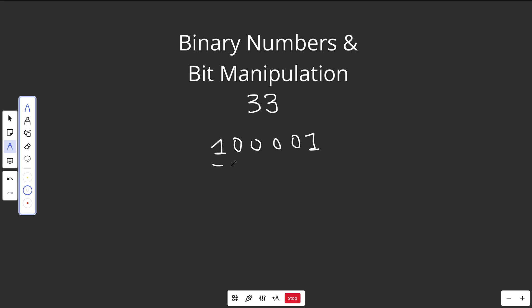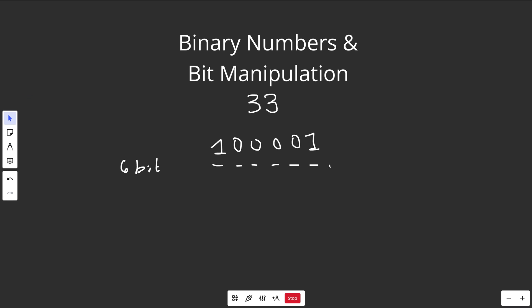Just some terminology: we'd call any of these positions a bit. So this is a 1-bit, this is a 0-bit, and basically this is a 6-bit number because we have 6 bits to represent it. Now 6-bit numbers don't really exist — generally we have bits in powers of 2. So you might have a 4-bit number, an 8-bit number, 16, 32, 64, and so on.